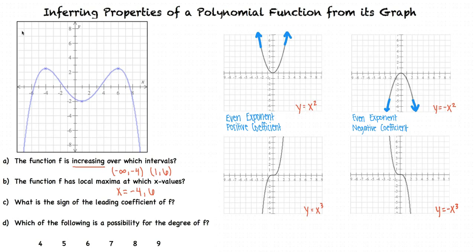Now looking at y equals x cubed and y equals negative x cubed: if the degree of the function is odd and the leading coefficient is positive, the left end points down and the right end points up. If the degree is odd and the leading coefficient is negative, the left end points up and the right end points down. You could also compare y equals x to the fifth and y equals negative x to the fifth, or y equals x to the seventh and y equals negative x to the seventh.